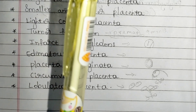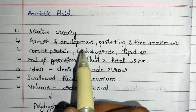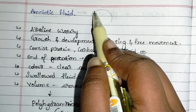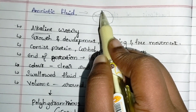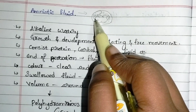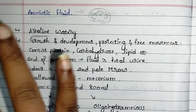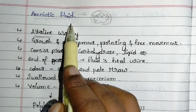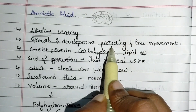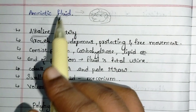Amniotic fluid is generally alkaline water — not acidic in nature. It is present in the womb surrounding the baby. The functions of amniotic fluid: it helps in the growth of the baby and development of organs like the lungs; it helps in protecting the baby from infections; and it helps in the free movement of the baby.